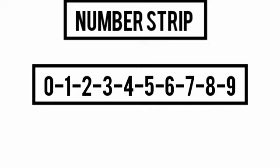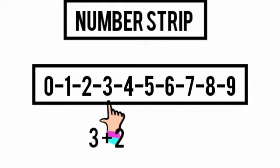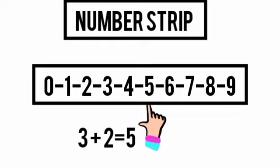Try some more sums on the number strip. Add three plus two. First jump three steps from zero: one, two, three. Then you jump two more steps: one, two. Which number do you reach? Yes, we reach number five. So three plus two is equal to five.